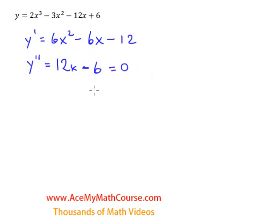So I'll set this equal to 0. So 12x equals 6 because I can add 6 to both sides of the equation. Divide both sides by 12 and x is going to be equal to half.